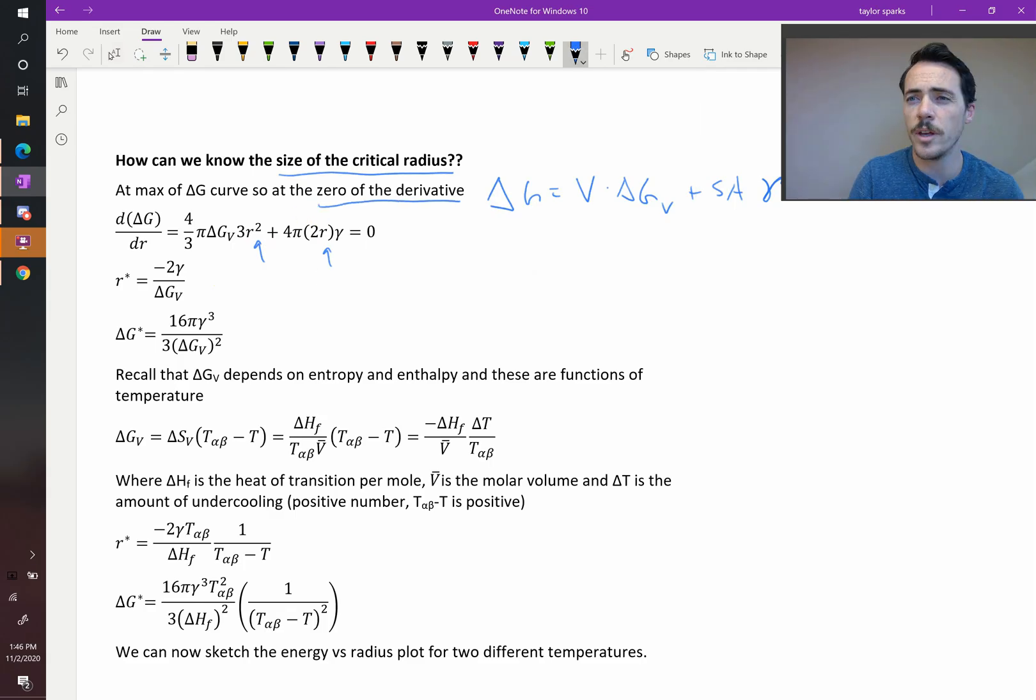So when we set that equal to zero we can solve for R and we can solve for the zero of this function, which will be R star. When I do that I find that R star is equal to negative two times the surface energy divided by the volumetric change in the Gibbs free energy of this system.